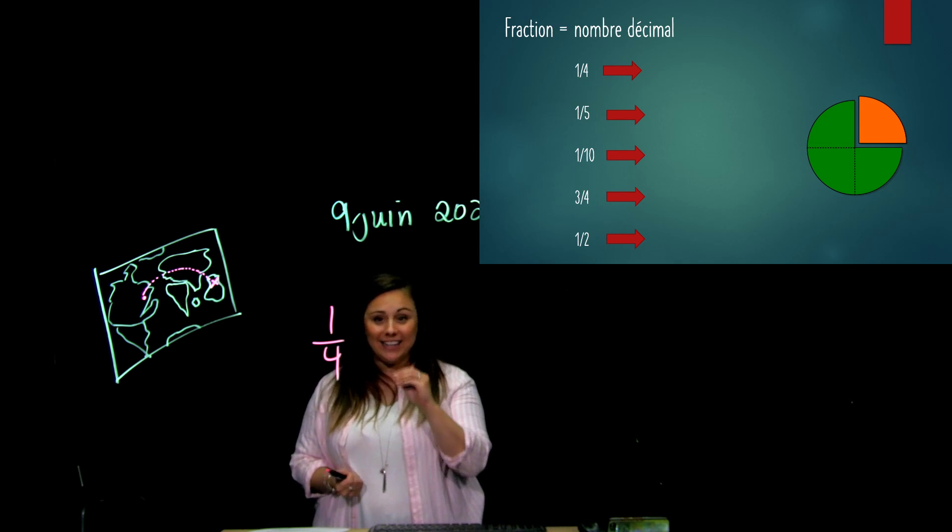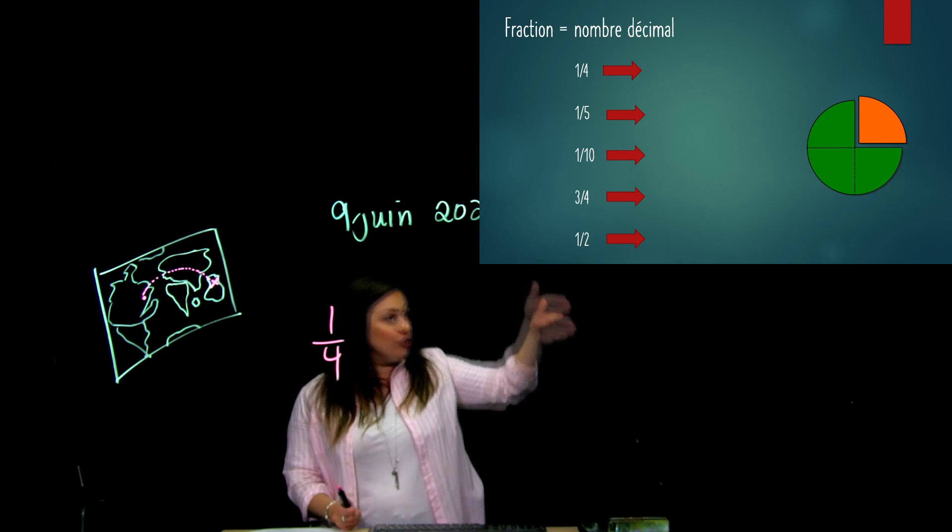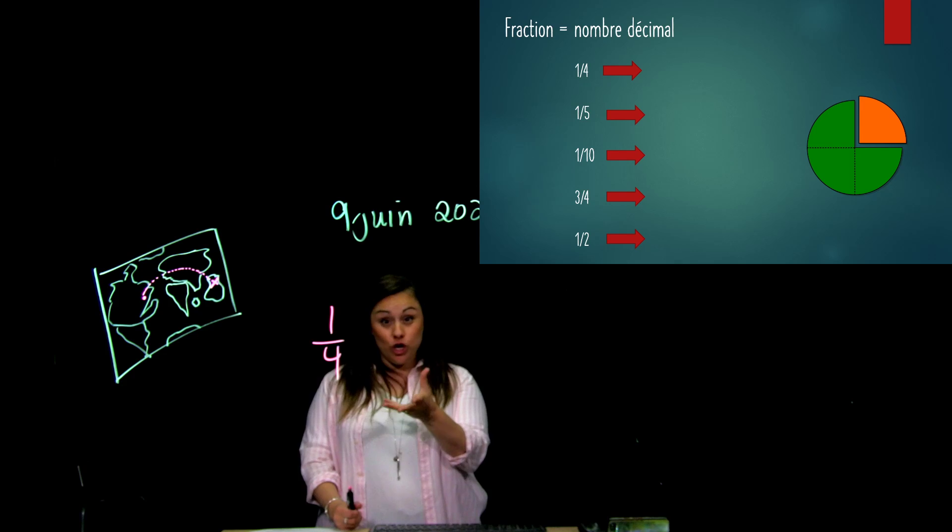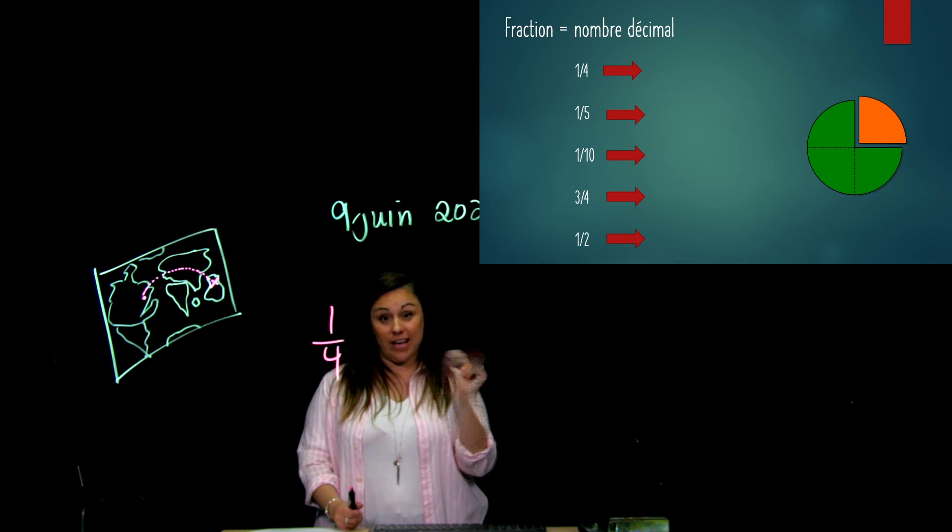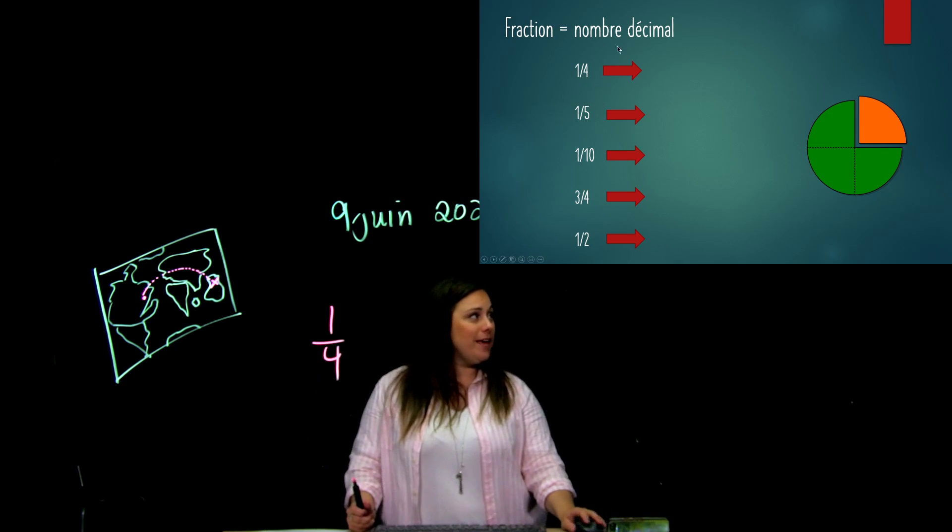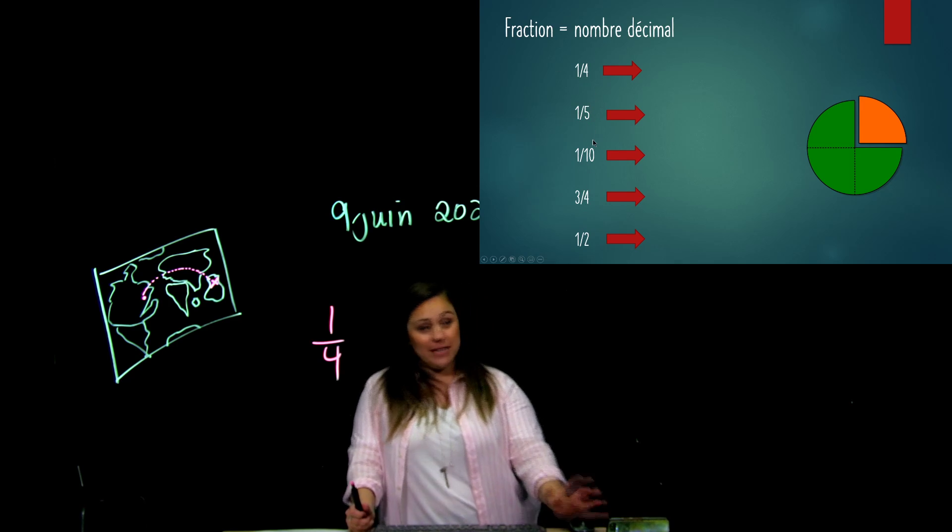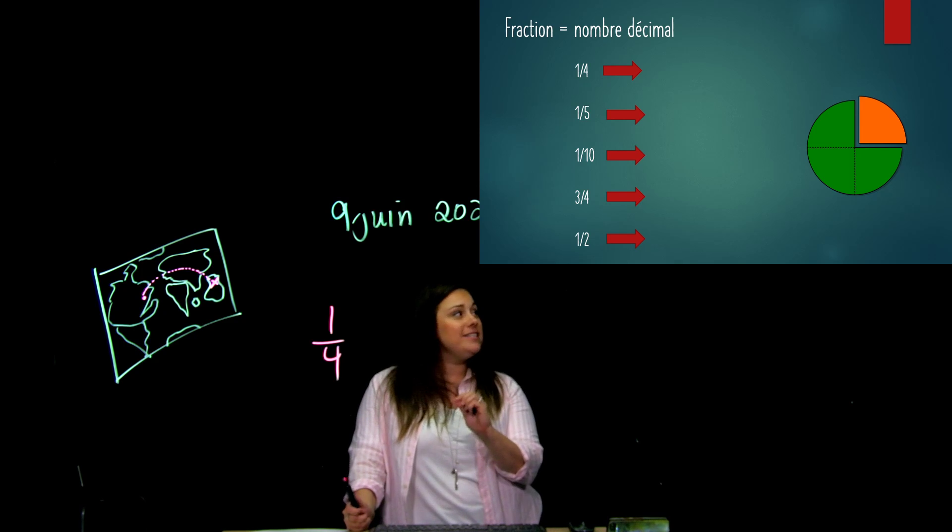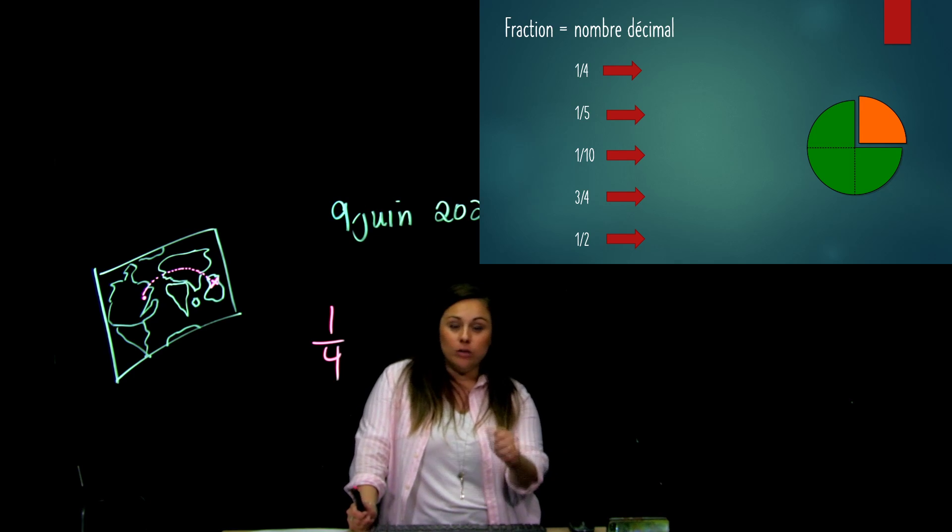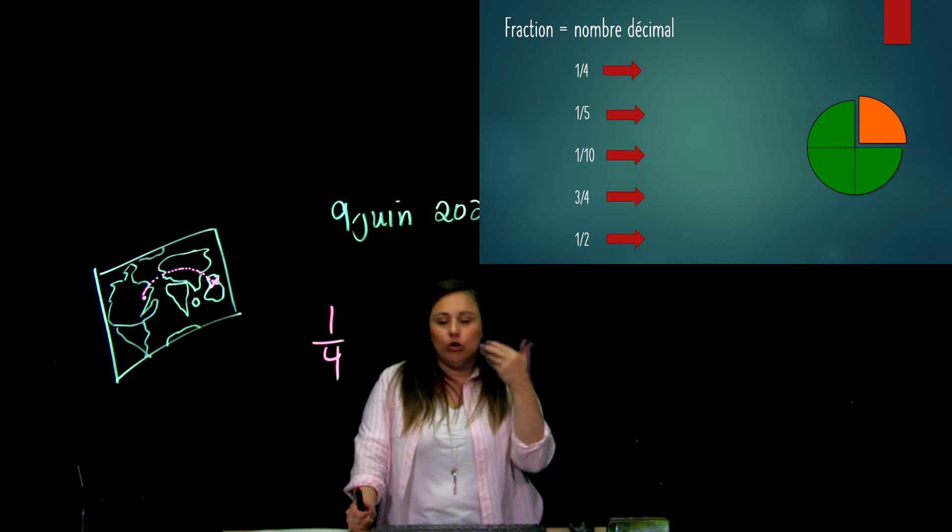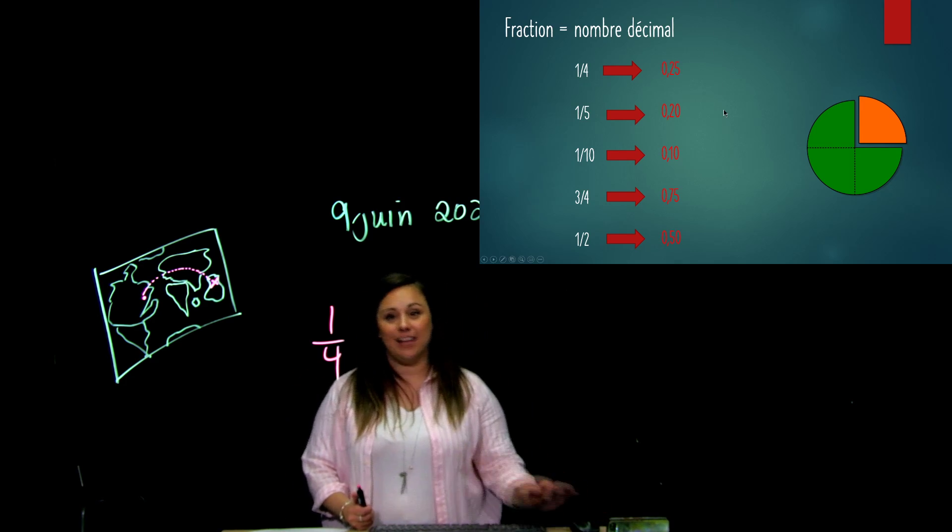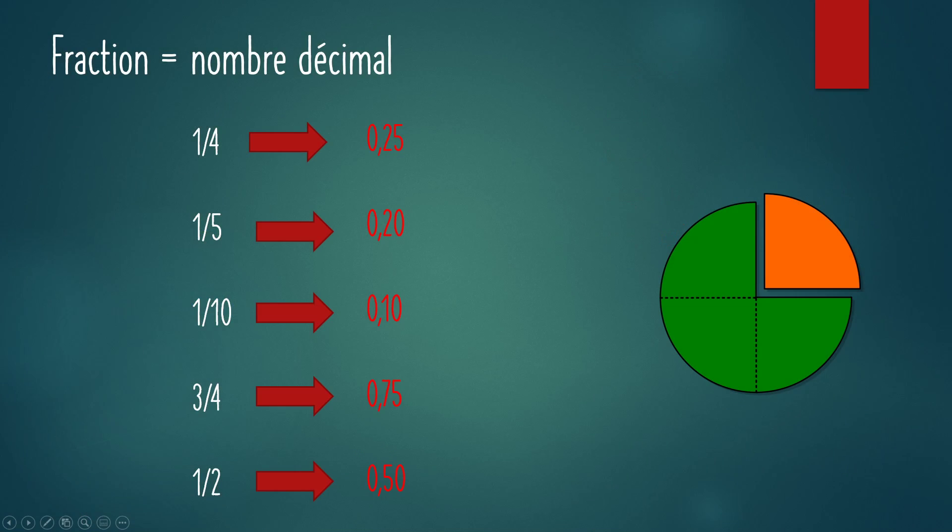Alors, ce que je t'invite à faire, c'est dans ton carnet, de les écrire, cette liste de fractions-là, d'aller les écrire. Qu'est-ce que ça fait en nombre décimal? Parce qu'une fois que tu l'as en nombre décimal, bien, c'est facile de le mettre en pourcentage. Vraiment facile, parce que tu les as déjà les dixièmes et les centièmes. Alors, regardons ça, peut-être essayer de ton côté. Moi, j'étais toi à la maison, j'arrêterais là, je ferais une petite pause, j'essaierais de trouver, c'est quoi ça, un quart?